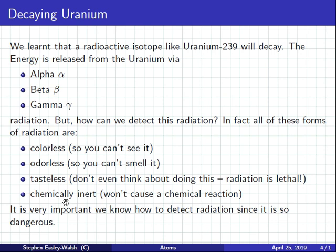But, it's important we can measure radiation because it's dangerous. But, how can we do this? If it's colorless, odorless, tasteless and chemically inert, how can we do this? Now, before I continue, it's important that you write this down. Alpha, beta, gamma are colorless, odorless, tasteless and chemically inert.